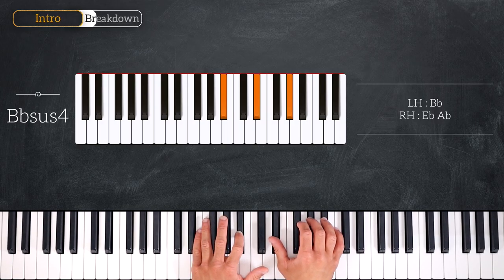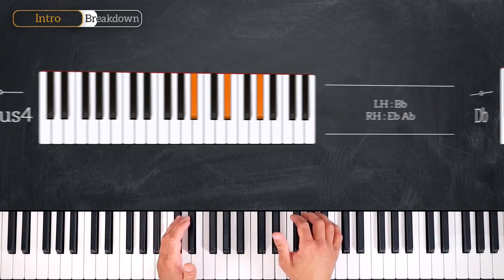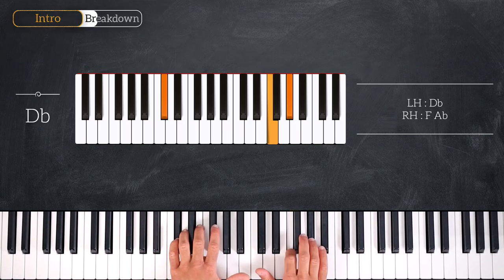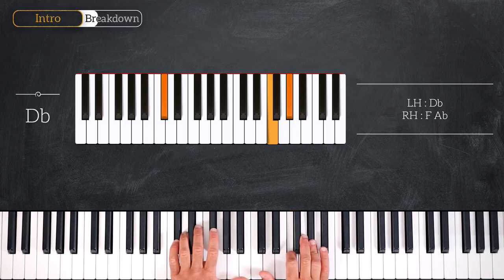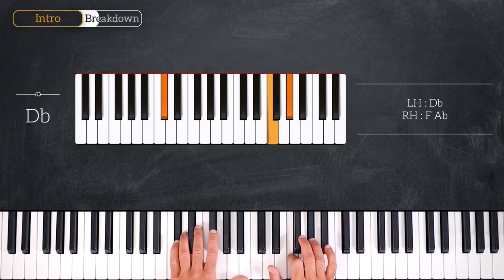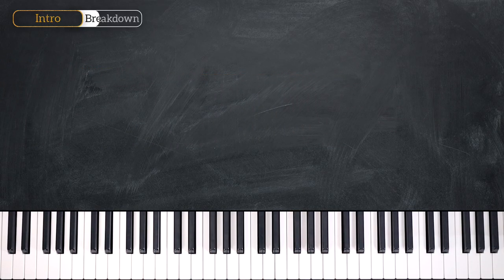And we'll end this chord progression on the fourth degree playing this Db major chord, playing Db on the left, the third and the fifth on the right hand, F and Ab. Okay, so let's dive into the introduction.